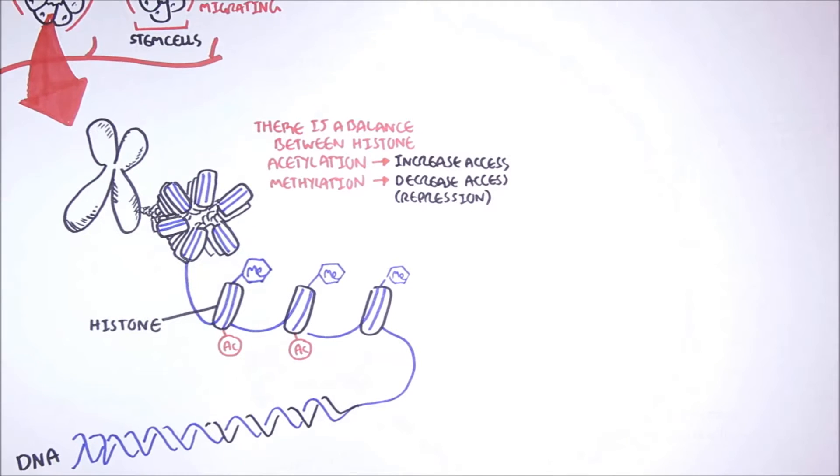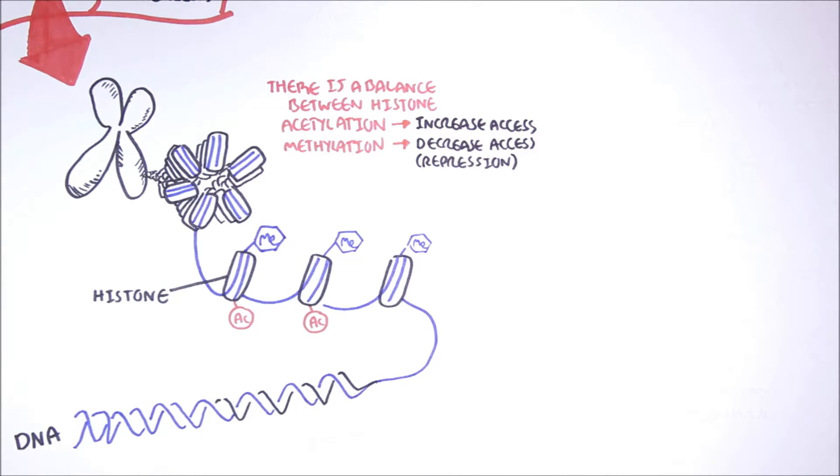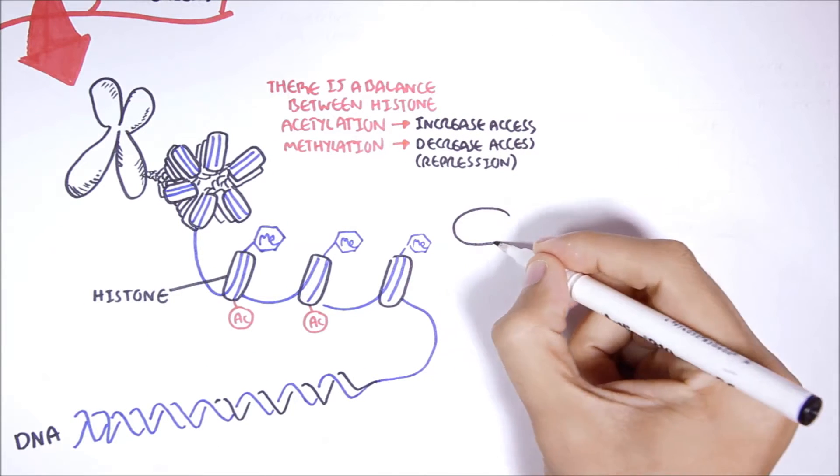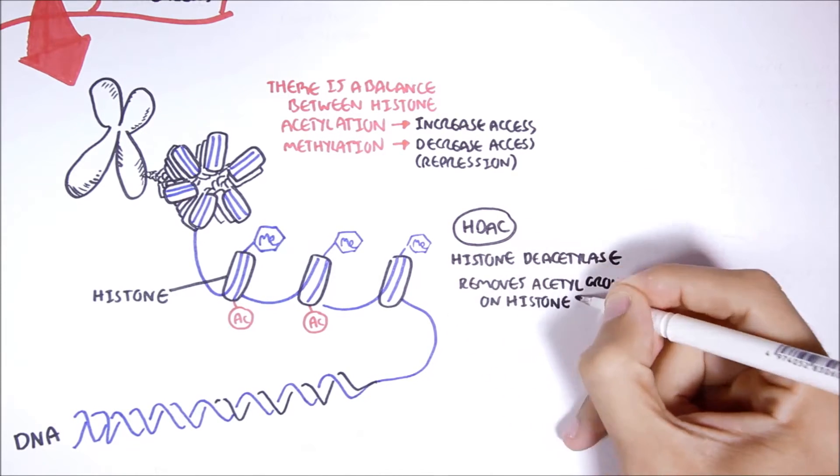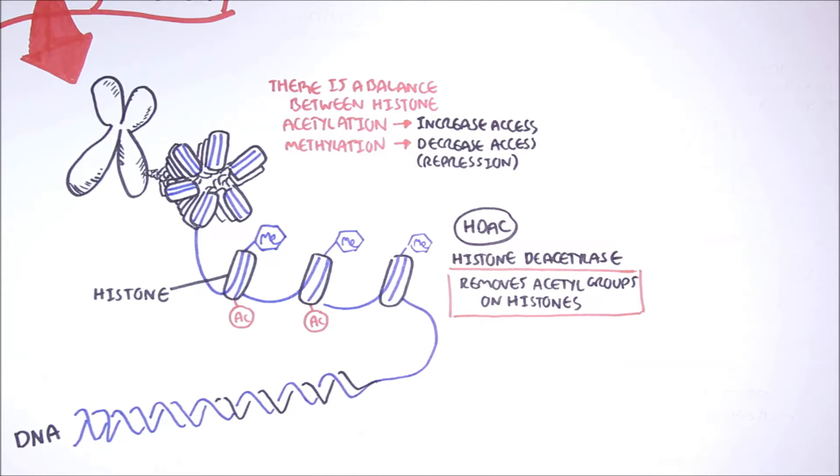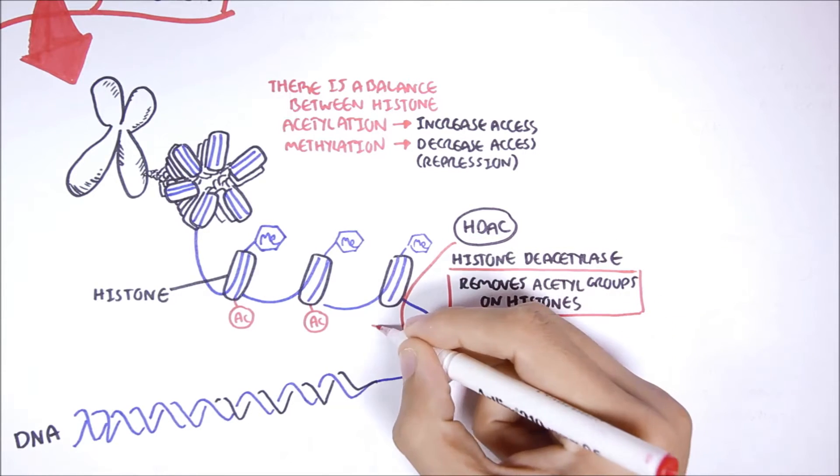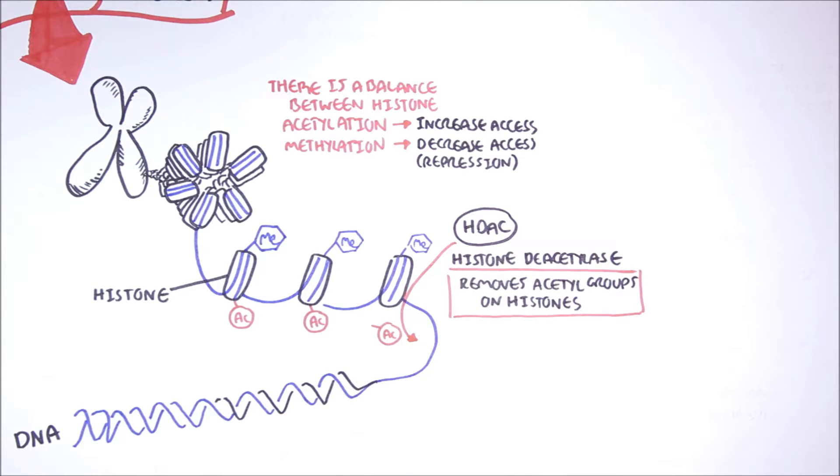Now, an important enzyme to know is HDAC, which is histone deacetylase. This enzyme essentially removes an acetyl group from the histone. So here, the enzyme is removing the acetyl group from this histone. And HDAC is an important enzyme in decreasing access for transcription factors.